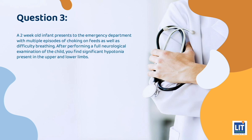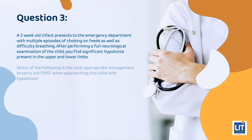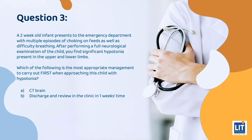Question 3: A 2-week-old infant presents to the emergency department with multiple episodes of choking on feeds as well as difficulty breathing. After performing a full neurological examination, you find significant hypotonia in the upper and lower limbs. Which of the following is the most appropriate management to carry out first? A. CT brain. B. Discharge and review in clinic in 1 week. C. Muscle biopsy. D. Stabilise the patient and secure the airway. Or E. Thyroid function test. The answer is D.